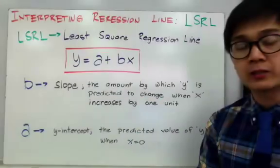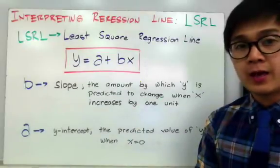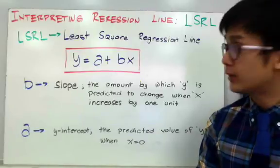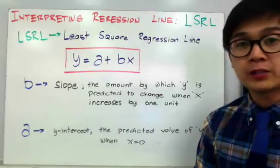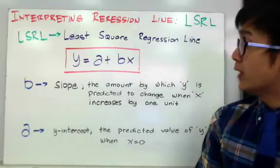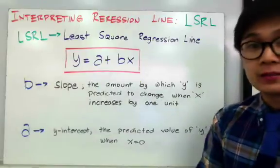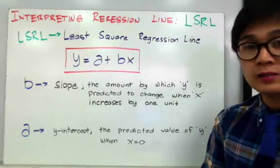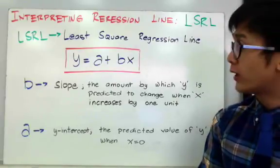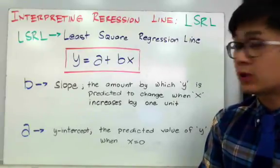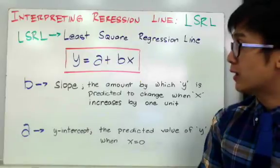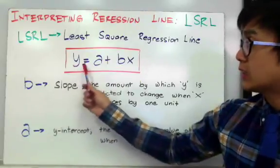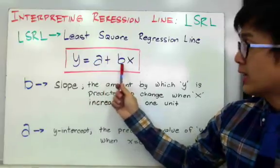One of the many applications of analyzing two quantitative data sets in statistics is predicting an outcome based on our linear model. LSRL in this particular chapter is the least squares regression line, which is a formula we use — a linear model that would predict the value of y given x, where y is equal to a plus bx.